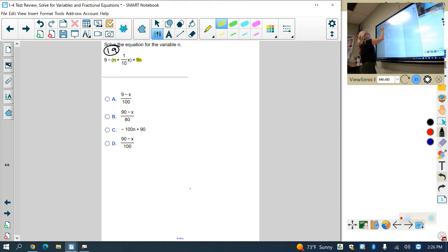so that means we have one here and we have one here. So that means we're going to have to distribute, combine like terms, and then go fishing again. Very similar to the two we just did before this.